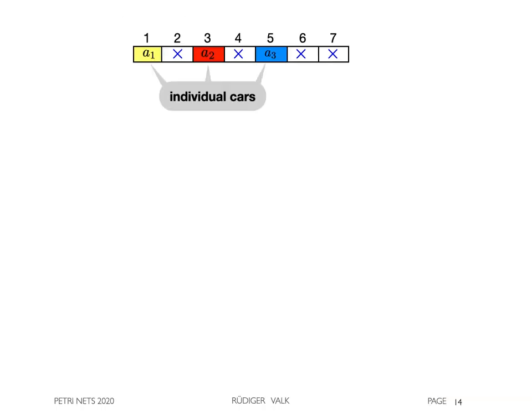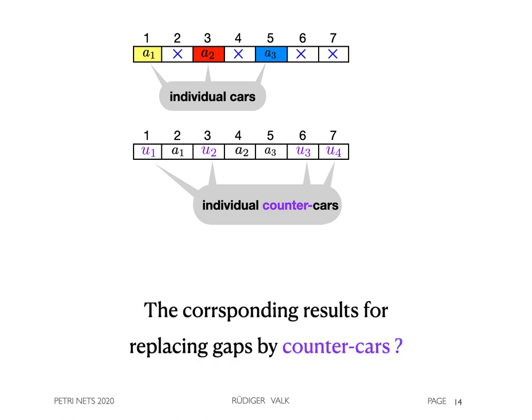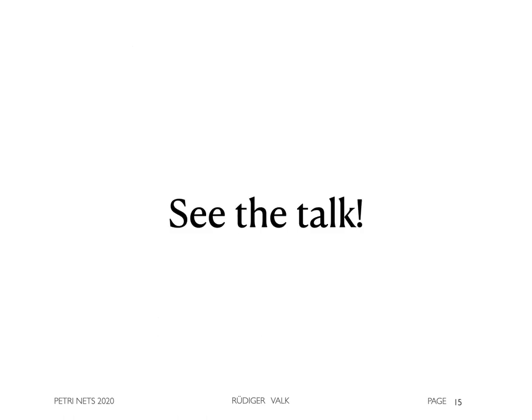Also, the gaps can be replaced by traffic items moving in opposite direction. They may be called counter-cars. Again, we ask what are the corresponding results for this case? This will be shown in the talk.